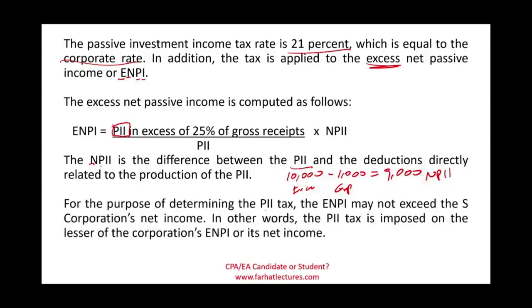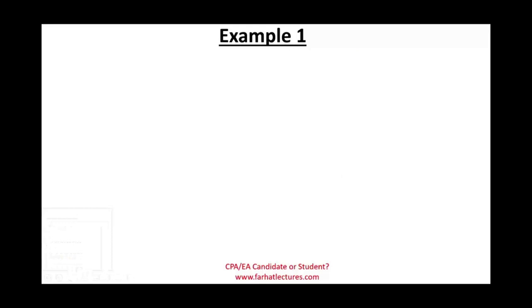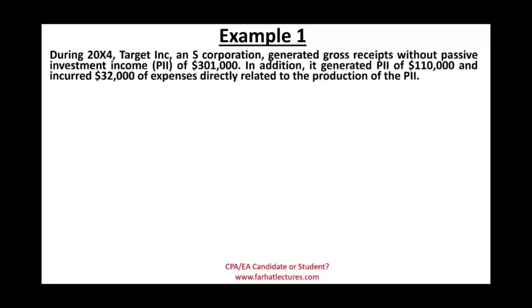For determining the PII tax, the ENPI may not exceed the S-Corporation's taxable income. The tax is imposed on the lesser of the corporation's ENPI or its net income. Let's look at a couple of examples to illustrate this concept.